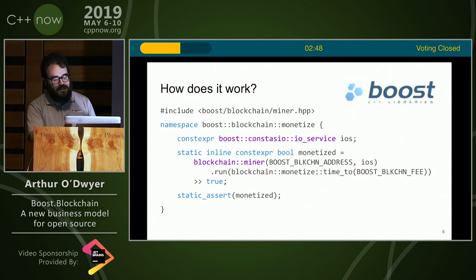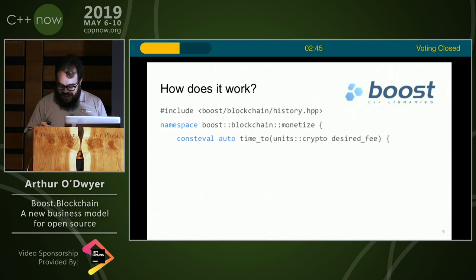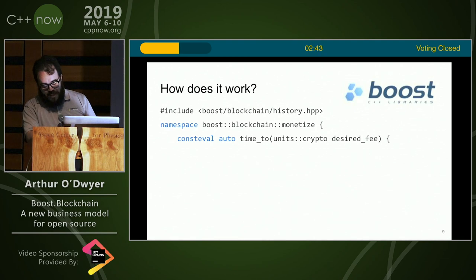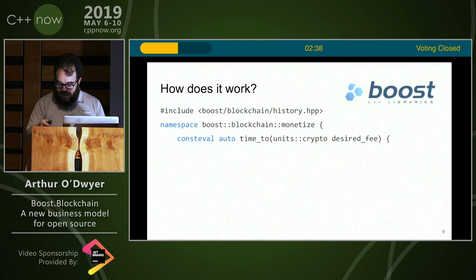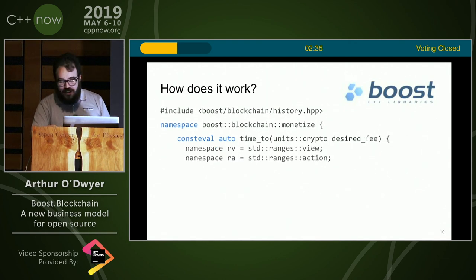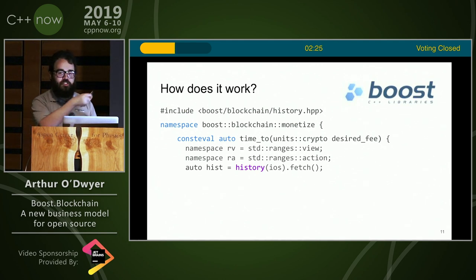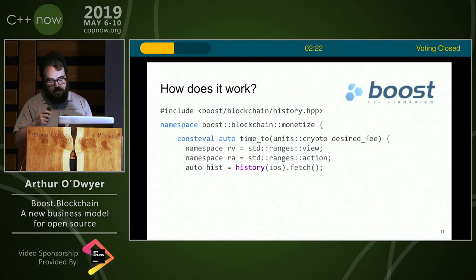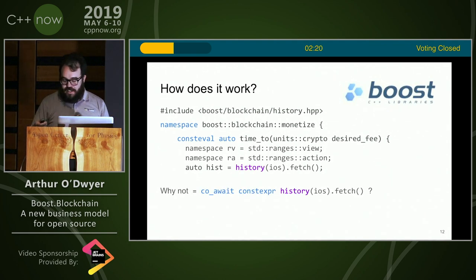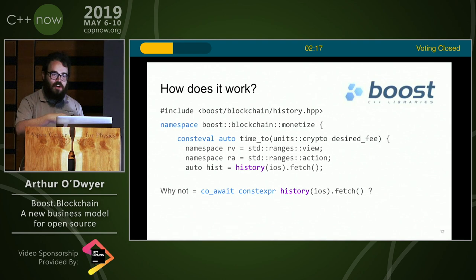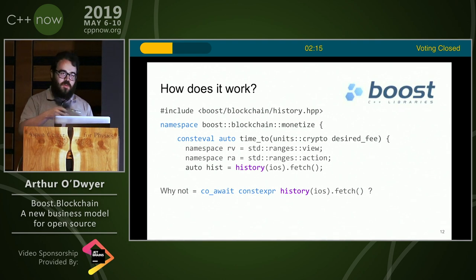Let's look at the time_to function that computes how long to mine for. It's a consteval function, as you saw in the opening keynote. It takes in the desired fee — again, we're using Boost Units, so it's all type-safe. We make a couple of namespace aliases; I highly recommend you do this anytime you're going to be dealing with ranges. Then we create a history object using our I/O service and we fetch the blockchain into a local variable. Some compilers will run out of memory at this point — I think we're working on it. By the way, why didn't we use co_await constexpr? co_await constexpr being the same thing as regular co_await — it's like if constexpr for constexpr. If you can put constexpr in front of basically any keyword, it'll do something.